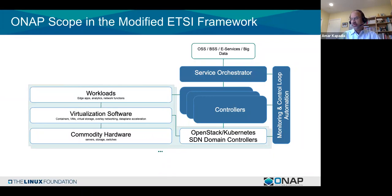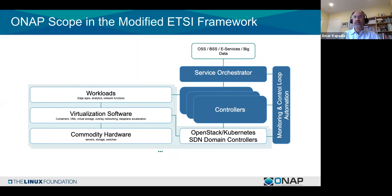Above that is the OSS-BSS layer. E-services are self-service portals for end users to order services or make changes. Big data services handle batch analytics on networking data — for example, reviewing which SLAs were violated in a particular month. That's ONAP in the scope of the ETSI framework.